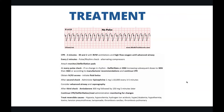Treatment for this rhythm: initiate CPR for two minutes, 30 and 2 with BVM ventilations and high flow oxygen until an advanced airway is in place. Every two minutes, do a pulse check, rhythm check, alternating compressors, and attach the monitor with defibrillation pads. If there's no change in rhythm, defibrillate 200 joules and then increase subsequent doses to 300 and 360, or whatever your manufacturer's recommendation is, and continue CPR. Obtain IV/IO access and initiate a fluid bolus. After the second shock, administer epinephrine 1 milligram of 1 to 10,000 every three to five minutes. Consider advanced airway and waveform capnography.